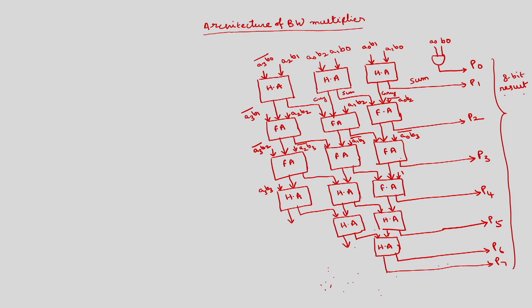Total 8-bit multiplication output is there. These extra bits are not used. Now we have to write the Verilog code. We have to first write the half adder code and then the full adder code, then instantiate the half adder code 8 times and the full adder code 7 times to get the Booth multiplication. We require some wires — w1, w2, w3, and so on.